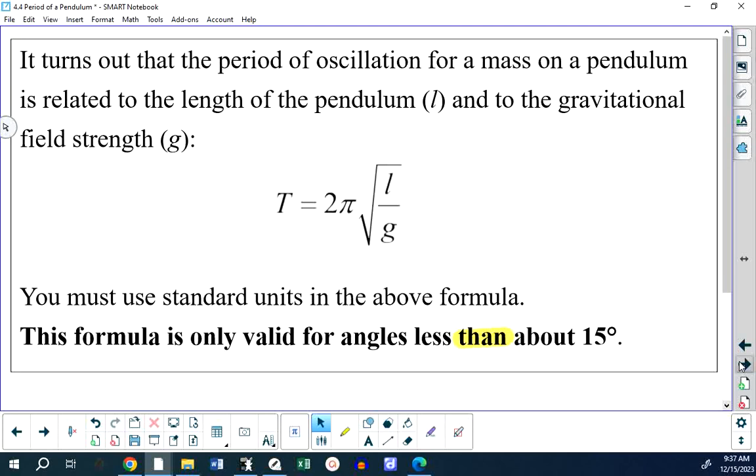Here's the formula. It really is quite similar in structure to the period of a mass on a spring. Its period equals 2 pi times L over G under the square root. Whereas for the mass oscillating on a spring, it's M over K under the square root. But there's an issue here with this formula. This formula has limitations to it.